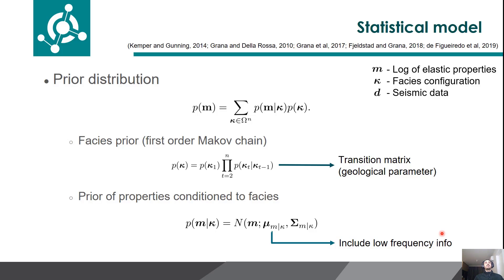Now we are going to discuss an improvement on the statistical model. We include the facies in the prior model, defined as kappa. The prior distribution of M is obtained by marginalizing the joint distribution over the facies kappa, where this summation is done over all the possible facies combinations along the size of the trace. The prior of the facies is considered to be a first-order Markov chain, where the facies at a given position depends only on the first neighbors, and the probabilities are given by the transition matrix, which is a geological parameter of the inversion. The other prior term, M given kappa — the elastic properties given the facies — is assumed to be Gaussian, with a mean and covariance that depends on the facies configuration. So for a given facies sequence, the prior is the same as the Bayesian linear inversion previously discussed.